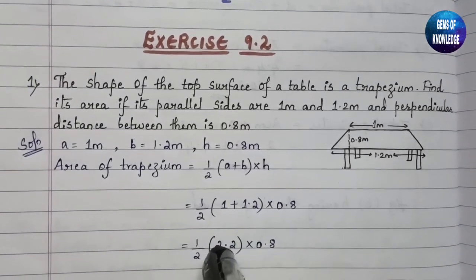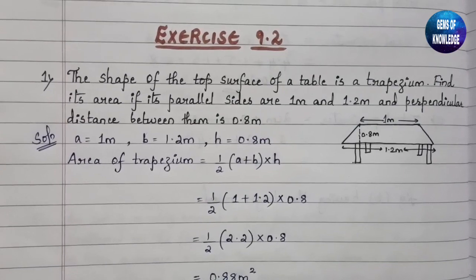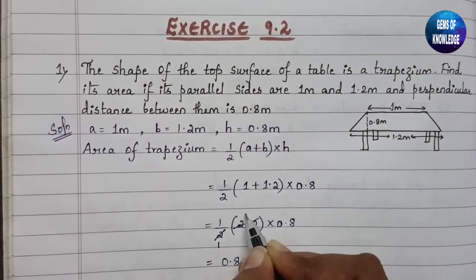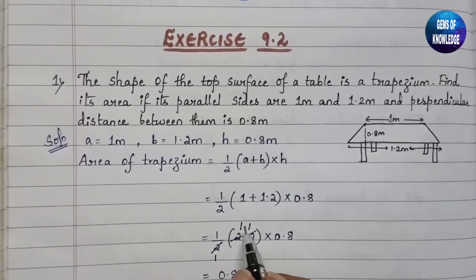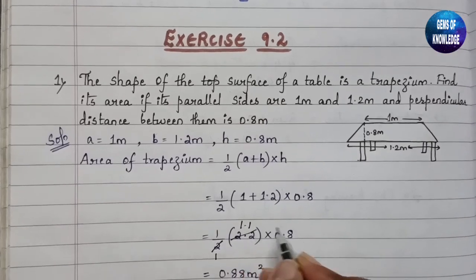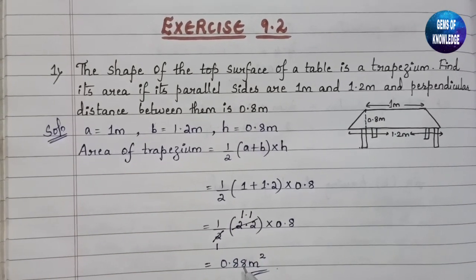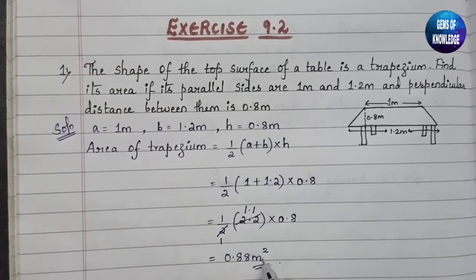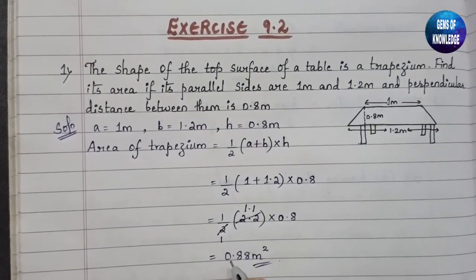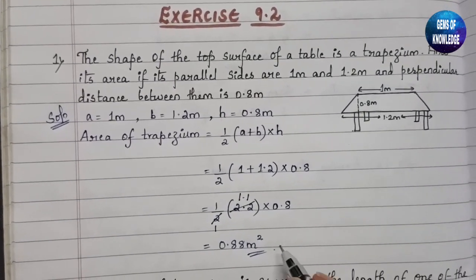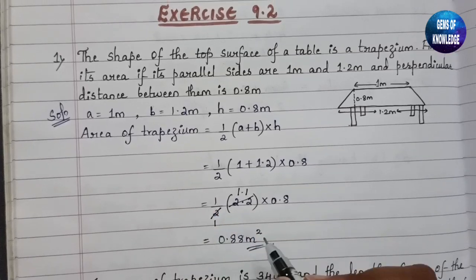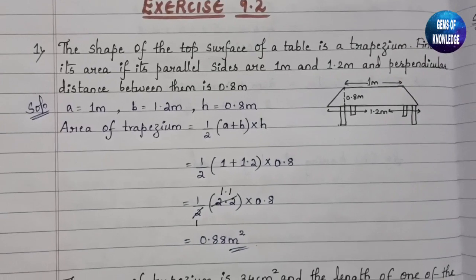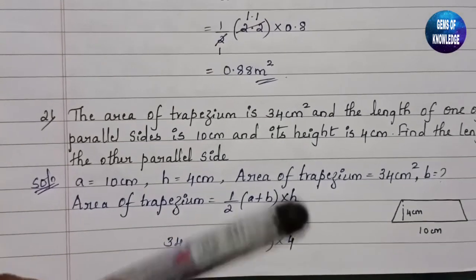1 plus 1.2 is 2.2. Dividing 2.2 by 2 gives 1.1. Then 1.1 into 0.8 gives 0.88 meter square. Area is always measured in square meters, so the answer is 0.88 meter square.